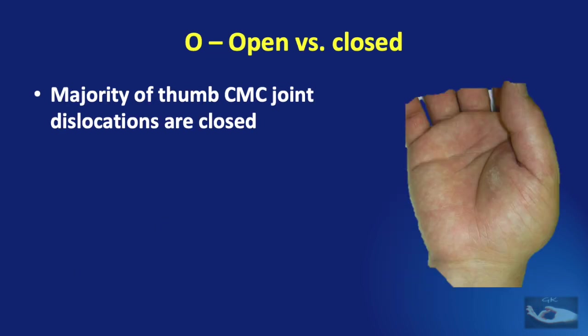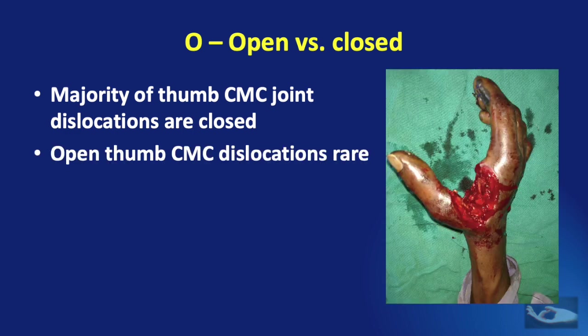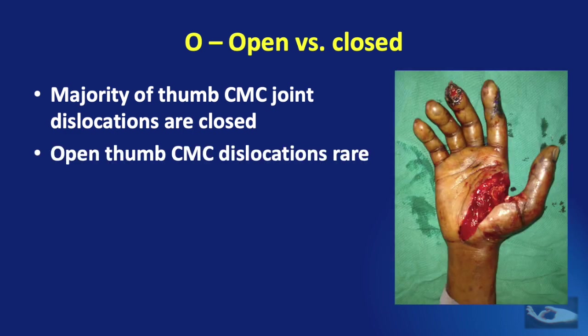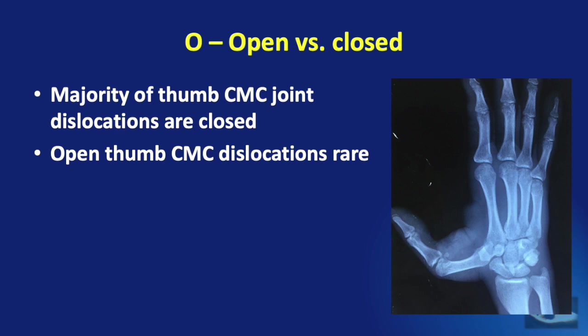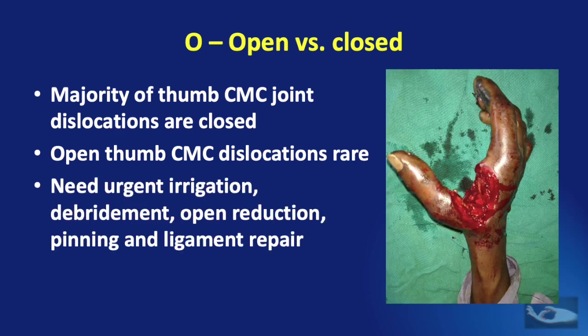The majority of thumb carpometacarpal joint dislocations are closed. Open dislocations can be seen especially in blast injuries but are rare. Such open dislocations need urgent irrigation, debridement, open reduction, pinning, and ligament repair.